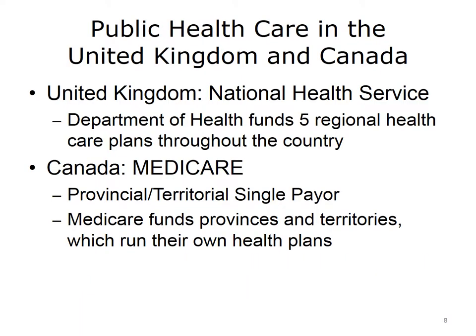In the United Kingdom, healthcare is centrally administered by the Department of Health. The Department distributes funds to single-payer systems in five regions of the country. With some exceptions that will be discussed later, healthcare services are primarily provided at government facilities by government-employed providers. It is the prototypical socialized medicine model. In Canada, the Federal Health Canada Department administers a program called Medicare, which distributes funds to provinces and territories. These regions are similar to states in the U.S. The provinces and territories use the federal funds, along with regional funds, to administer their own provincial or territorial healthcare plans.